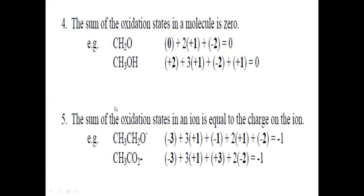Rule: the sum of oxidation states in an ion equals the charge on the ion. If we assign any charge to a molecule, such as an ethoxide ion which has a minus charge, then the sum of all oxidation states must equal that charge. The overall charge can be zero, plus one, or minus one depending on the structure of the molecule.